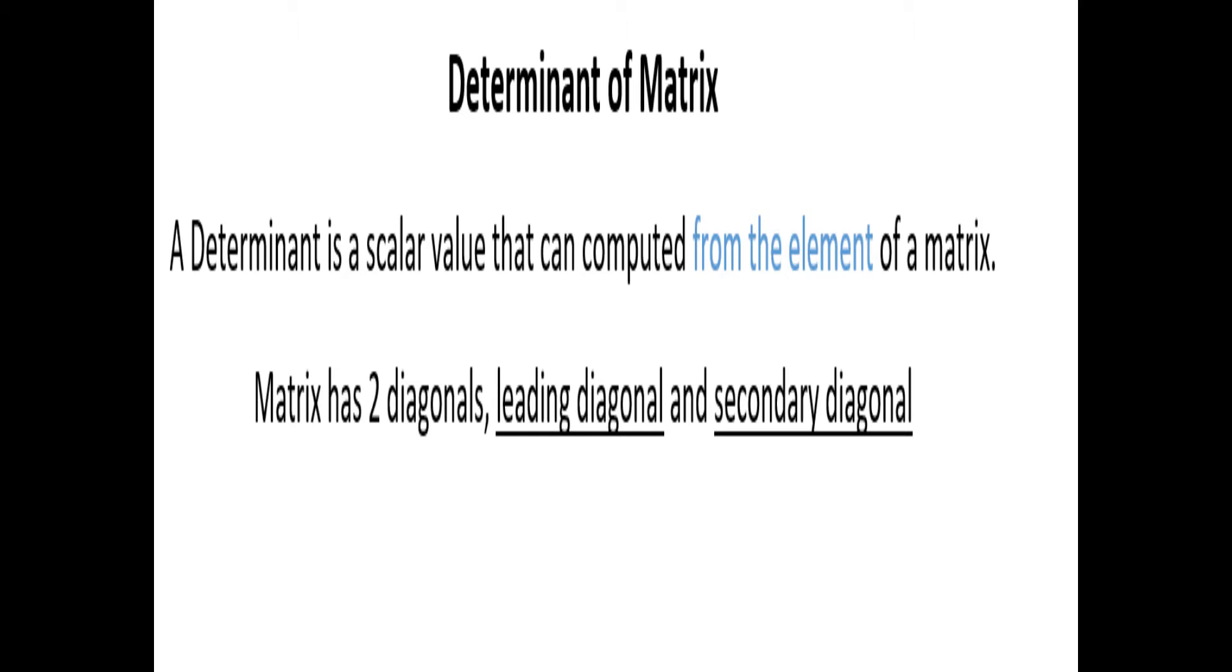So before you go on, there's some things you need to know: what is a determinant of a matrix? A determinant of a matrix is a scalar value that can be computed from elements of a matrix. The elements of a matrix - we said each number in a matrix is called an element.